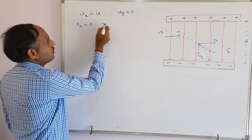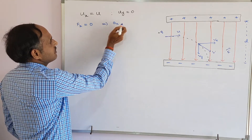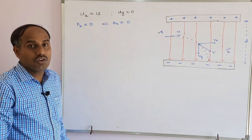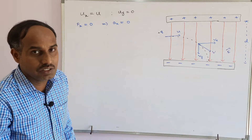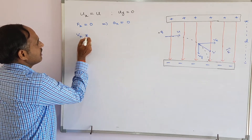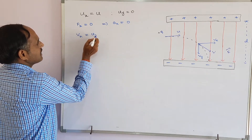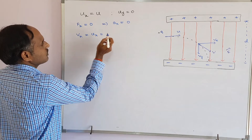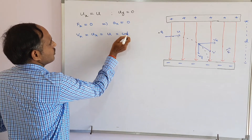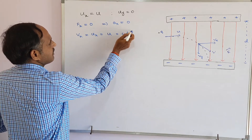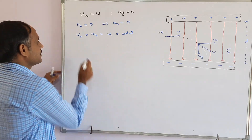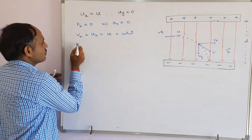Since Fx = 0, this implies ax = 0. When there is no acceleration along the horizontal direction, the horizontal component of velocity remains constant, meaning vx = ux = u, which is constant.